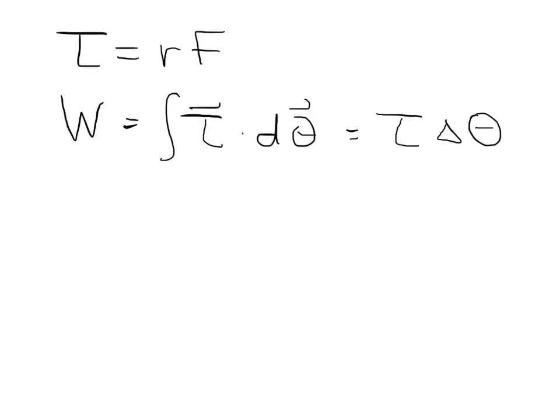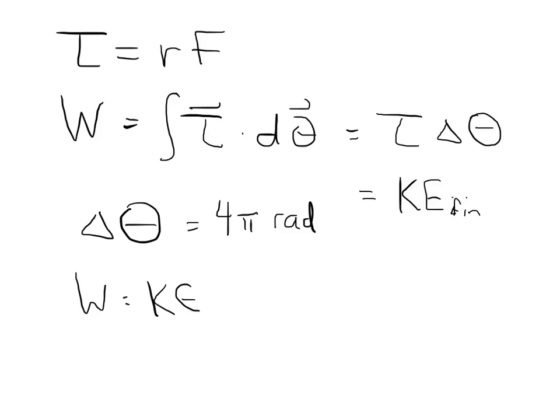That is equal to the final kinetic energy because initially it's at rest. Now we have to calculate τΔθ. We already calculated the magnitude of the torque up here. We know that Δθ is two revolutions, which means there's 2π radians per revolution, so it's just 4π radians. The work that was done, which is equal to the final kinetic energy, is just going to be r times F times 4π.